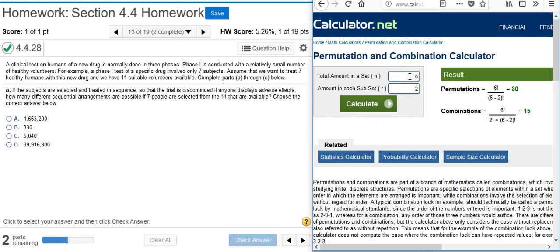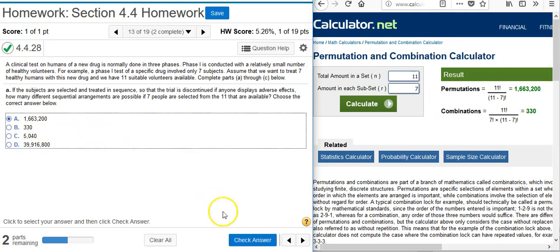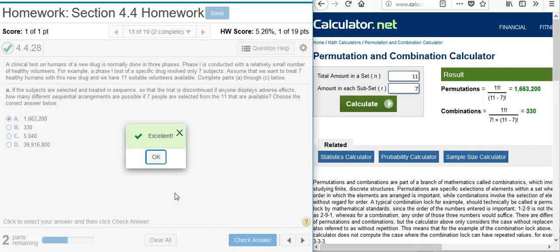At this point I go over to my online calculator. I'm going to put in the total number of the set, which is eleven, because there are eleven people that we want to treat. The total that we're selecting from is seven. So we're taking eleven people, selecting them seven at a time. I hit calculate, and this is the number of permutations that I'm looking for. So I go over here to my answer field and select that answer option. Excellent.